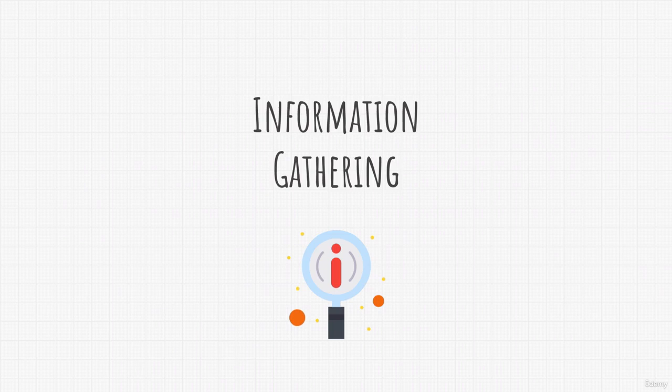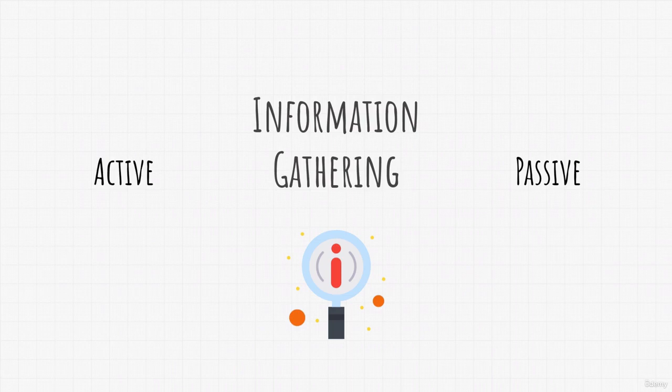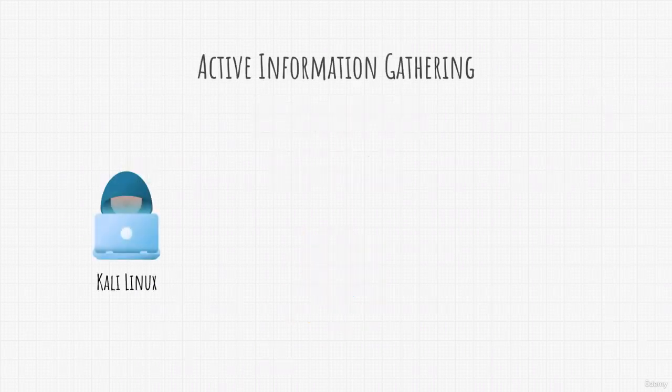If you remember, there are two types of information gathering: active information gathering and passive information gathering. We talked briefly about them before, but now it is time to fully explain what both of them are. Let's start with active information gathering.